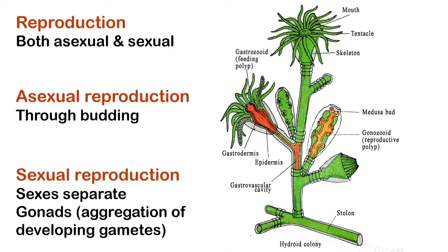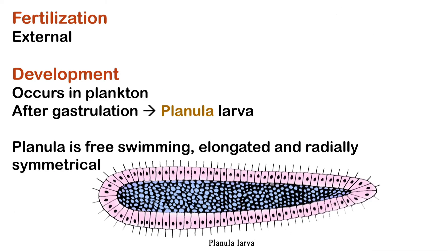The sexes of most cnidarians are separate. The gametes develop from the interstitial cells and form aggregations in specific locations. There are no specialized gonads, but the aggregation of gametes occurs either in the epidermis or gastrodermis, with no surrounding wall of somatic cells as seen in most other animals. Fertilization is external, i.e. outside the body, and development occurs in the plankton. After the period of gastrulation, a free-swimming larva is attained termed the planula larva, which is elongated and radially symmetrical.